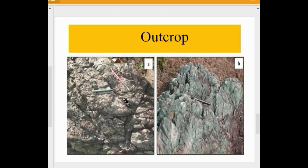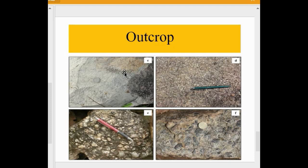Shown here are some outcrops from the Singhbhum Granite. This is metabasalt, showing foliation. This is foliated fuchsite quartzite. This is medium-grained granodiorite, and this is very coarse-grained alkali feldspar granite. There is also a special rock known as quartz pebble conglomerate, and a clast of smoky quartz in an arenaceous groundmass.